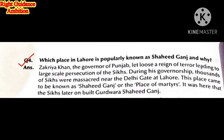The next question: which place in Lahore is popularly known as Shaheed Ganj, and why? Zakariya Khan, the governor of Punjab, unleashed a reign of terror leading to large-scale persecution of the Sikhs. Thousands of Sikhs were massacred near the Dhilli Gate at Lahore. This place came to be known as Shaheed Ganj. The Sikh community later built Gurdwara Shaheed Ganj there.